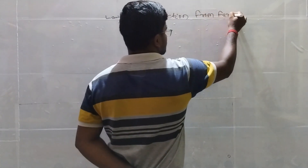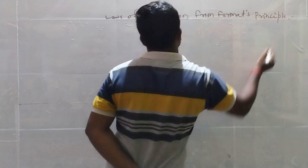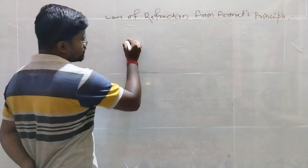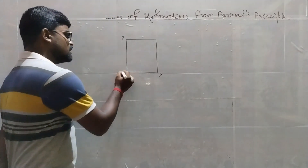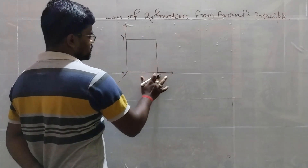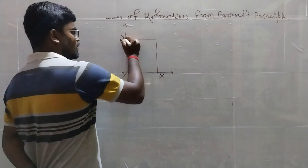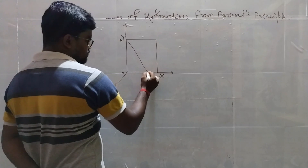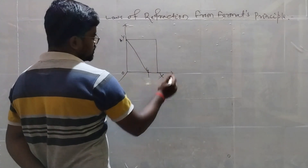Laws of Refraction from Fermat's Principle. This is the XY plane — here is the origin. This will be X, this will be Y, and this is Z. Now a ray of light coming from here is incident over here. There is the angle of incidence I. It has a refractive index mu1.